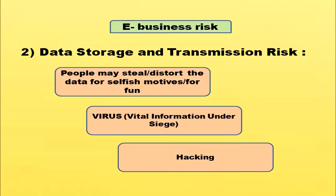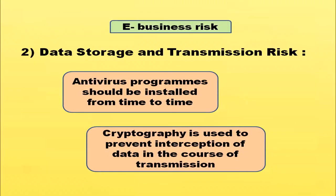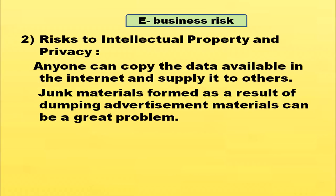Data storage and transmission risk: People may steal data for selfish motives. Virus and hacking methods are used for data spoilage, so antivirus programs should be installed and updated regularly. Cryptography is used to prevent interception of data in the course of transmission. Risk to intellectual property and privacy: Anyone can copy data available on the internet and supply it to others. Junk materials resulting from dumping of advertisement materials can also be a great problem.